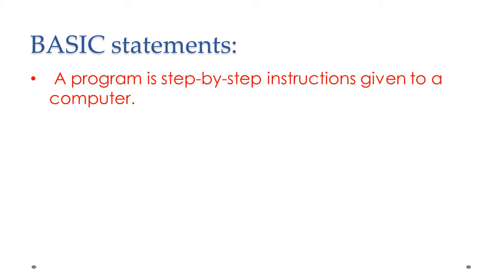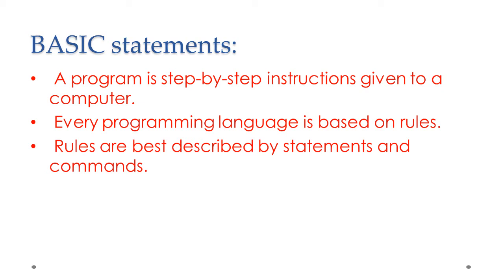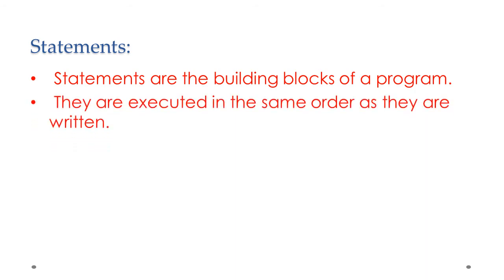Next is about basic statements. What is meant by a program? A program is step-by-step instructions given to a computer — line by line instructions that together are called a program. Every programming language is based on rules, and you need to follow those rules to get proper output. Those rules are described by statements and commands. Statements are the building blocks of a program — they are the main part. Without knowing statements, you cannot write any kind of program. They are executed in the same order as they are written.